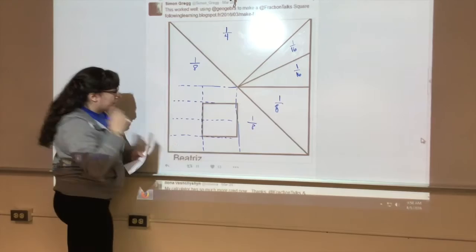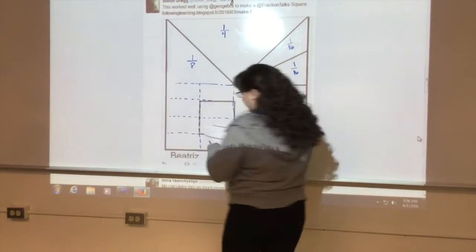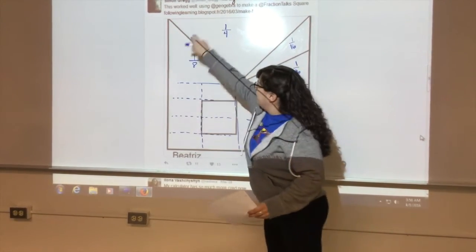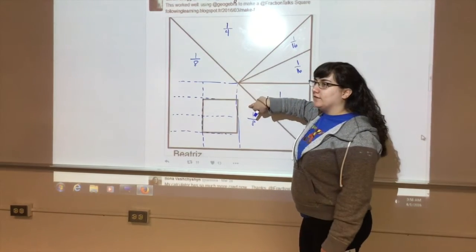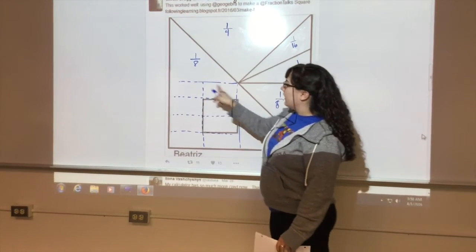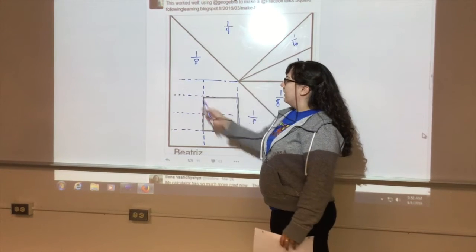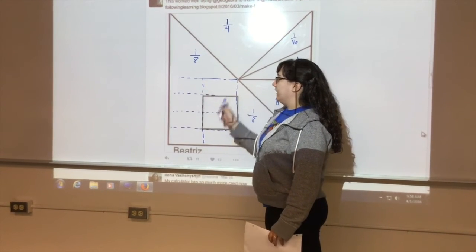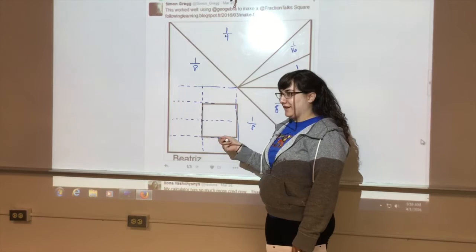And since this whole part was a half, and we've already taken two eighths, that's a fourth, so we've got a fourth left to work with. And then we take that fourth and we split it into eight parts, which I haven't figured out the fraction of that yet.